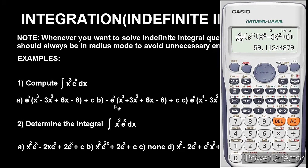This is how you can solve indefinite integration with the Casio calculator — it's as simple as that. In summary, all you have to do is evaluate the integral function and then differentiate the answer options to get your answer. Let's solve one more example.